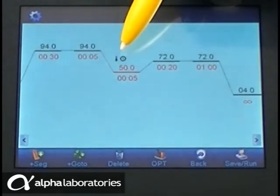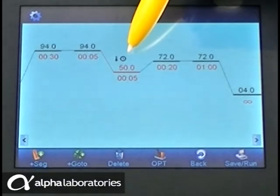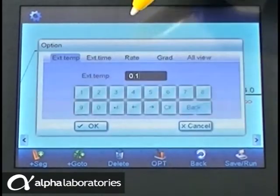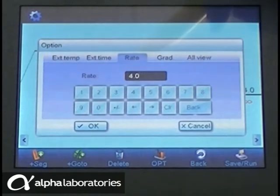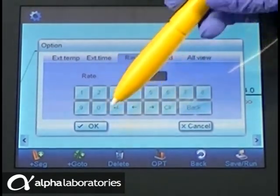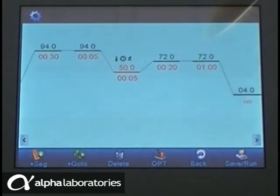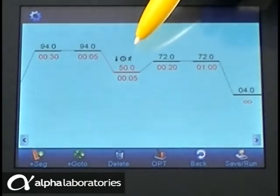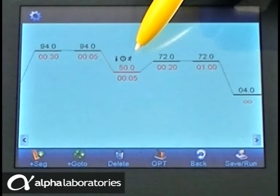When applied, these are indicated by the thermometer and clock symbols on the cycle screen. The heating and cooling ramp rate of the LifeEco block can also be controlled. The maximum is 4 Celsius per second, but you may wish to decrease this. Any alteration is indicated by the little running man symbol.